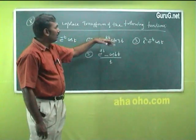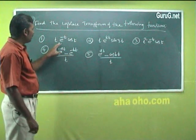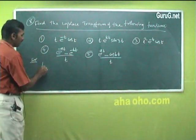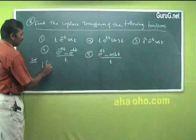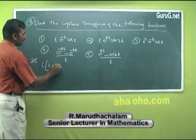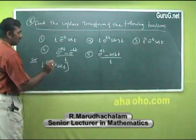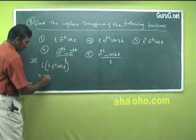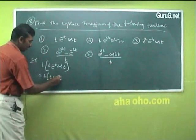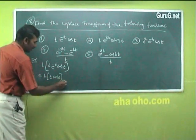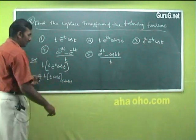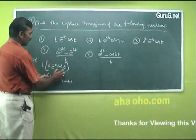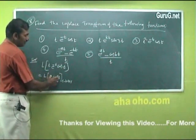Find the Laplace transform of the following functions. First problem: Laplace of t·e^(-t)·cos(t). First, remove the exponential term, then find L{t·cos(t)} with s replaced by s+1. Apply the shifting property for e^(-t)·t·cos(t), and you may get the shifting property form.